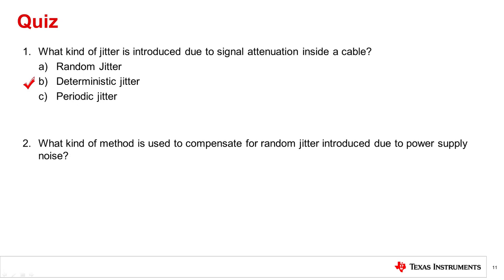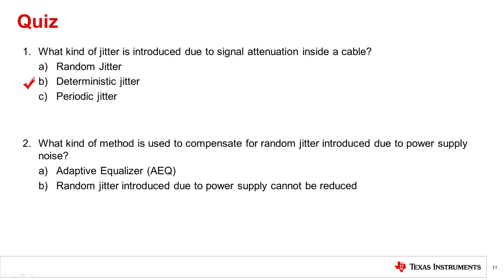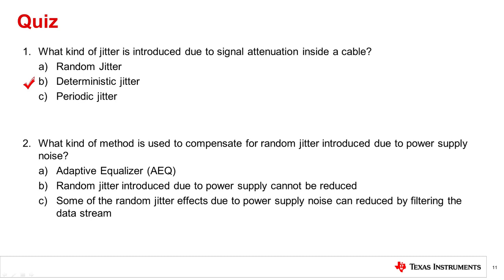Number 2: What kind of method is used to compensate for random jitter introduced due to power supply noise? Is it A. Adaptive equalization. B. Random jitter introduced due to power supply noise cannot be reduced. Or C. Some of the random jitter effects due to power supply noise can be reduced by filtering the data stream. Filtering can be an effective way as long as the supply noise components are at a much higher frequency compared to the data frequency components.